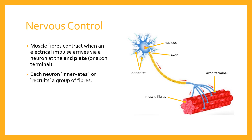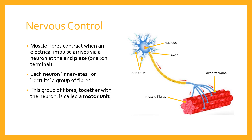Each neuron is touching not all the fibres, but a group of fibres. It's that group of fibres that will contract — not the whole muscle — when the neuron passes the electrical impulse into those fibres. We call that innervation or recruitment. So each neuron will innervate or recruit a group of fibres, similar to the ones you can see on the screen now. This group of fibres together with the neuron is called a motor unit.